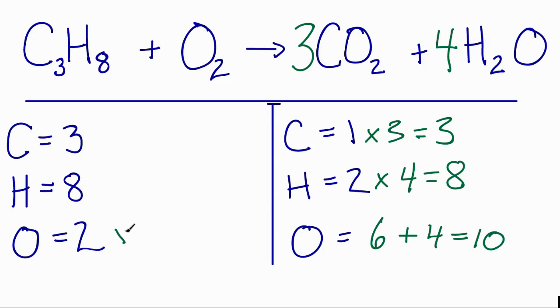So two times five, that gives me 10. So that means I need to put a five here in front of the oxygen. And once I do that, everything is balanced.